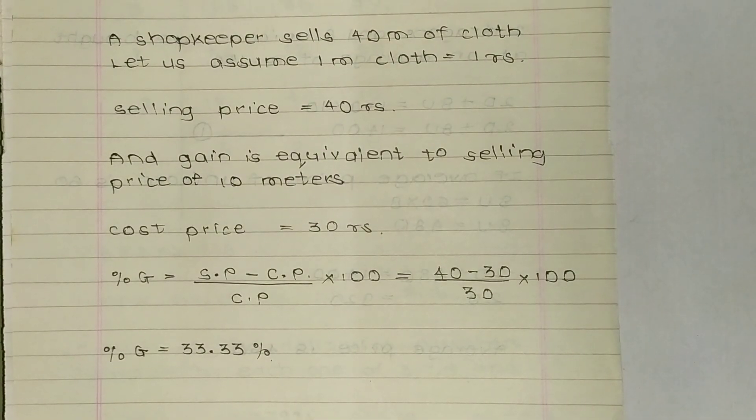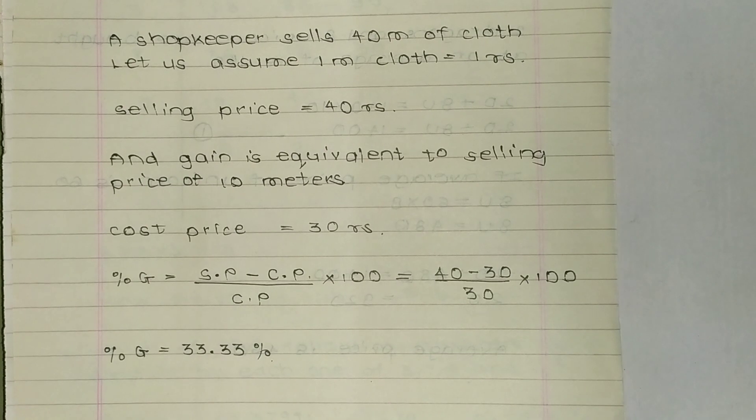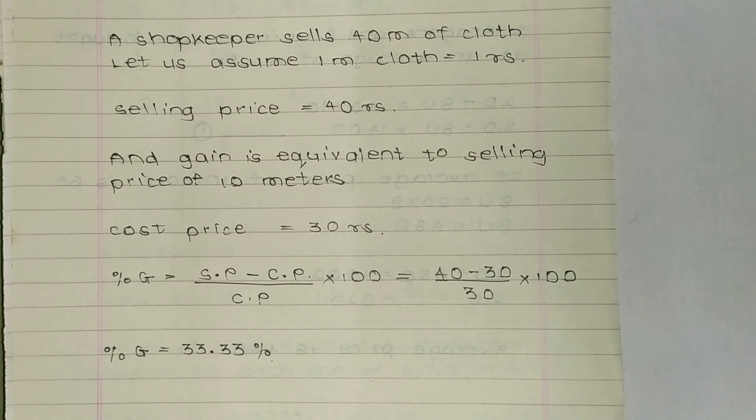Now it is equivalent to selling price of 10 meters, so cost price is current selling price minus 10 meters gain, that was 30 rupees. So cost price is now 30 rupees. Percentage gain is equal to selling price minus cost price divided by cost price into 100.